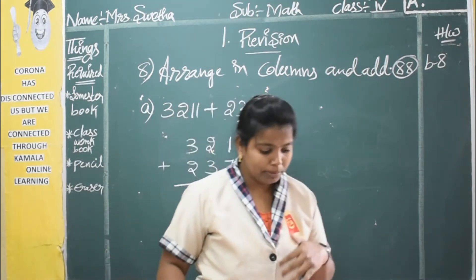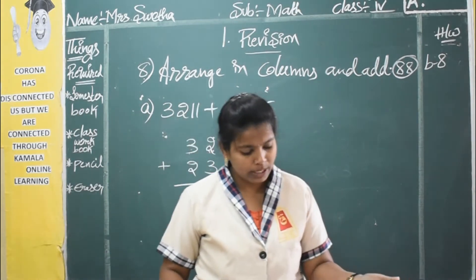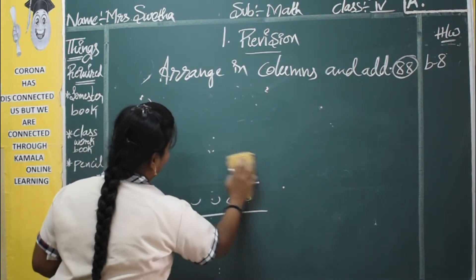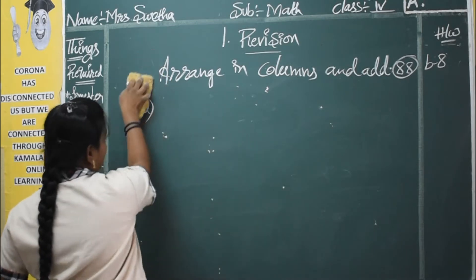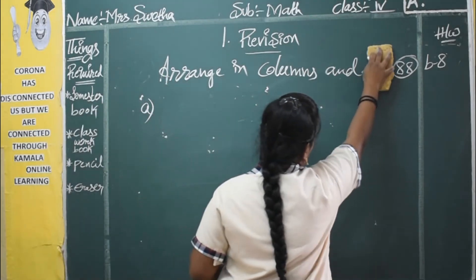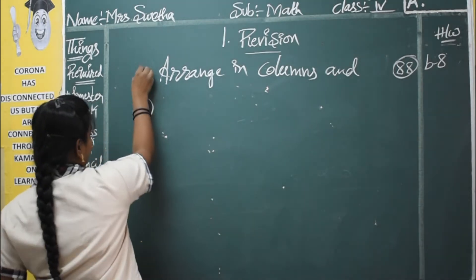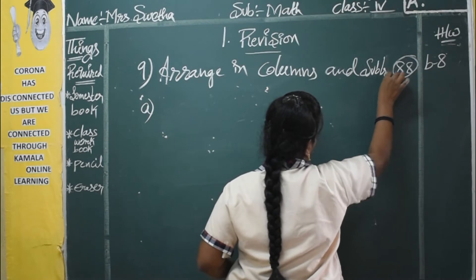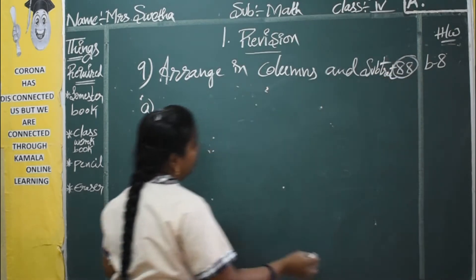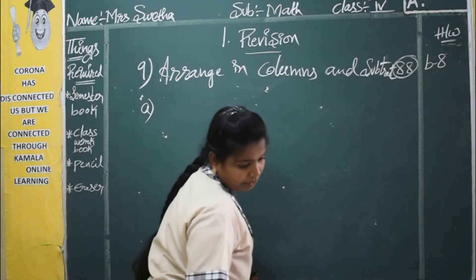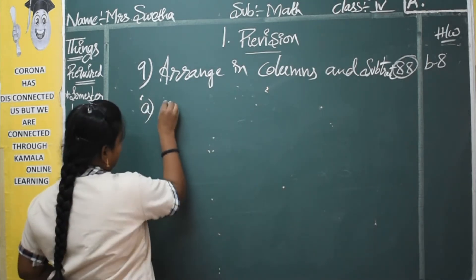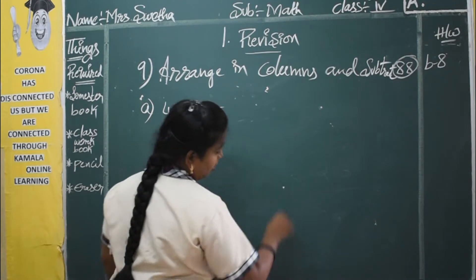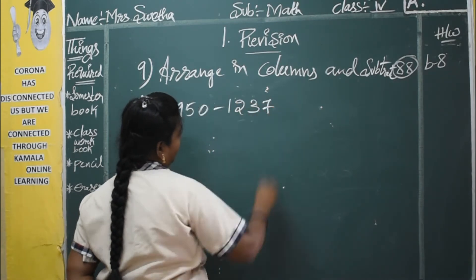The next bit is arrange in columns and subtract. This is also the same thing. Here I'll explain one problem — the process is subtraction. So what is the question given here? 41232 minus 1337.